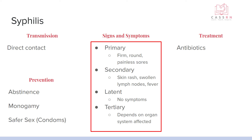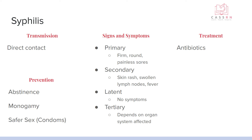Then it can reach the tertiary phase, which depends on which organ system it reached, but it can even affect the nervous system — the brain, nerves, blood vessels, bones, eyes, heart, liver, and joints — each causing associated symptoms. If it gets into the nervous system and brain, it can cause dementia, seizures, and paralysis. So definitely one you want to stay away from, and it's easily treatable with antibiotics.